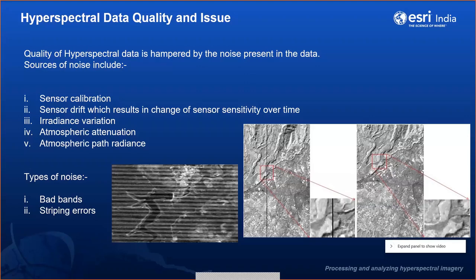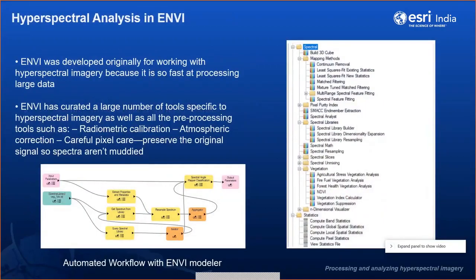To correct these datasets, we require advanced remote sensing software called ENVI. ENVI was originally developed to work with hyperspectral imagery and is very fast at processing large datasets. It can remove bad bands and correct atmospheric and data stripping errors. Hyperspectral image analysis tools support radiometric calibration, atmospheric correction, pixel purity, pixel statistics, and other spectral tools. ENVI also provides automated workflows for hyperspectral analysis using ENVI Modeler, and these models can be taken into ArcGIS Pro as well.